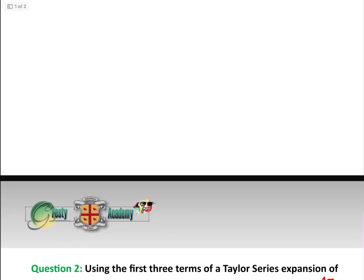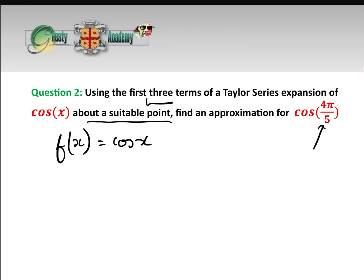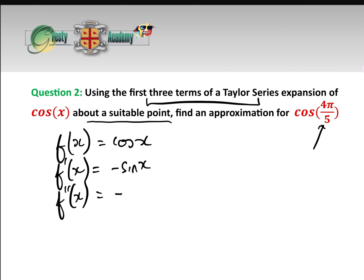This leads us to question 2, where it doesn't tell us where to do the expansion — just about a suitable point. You will lose a mark if you don't choose the right point. We need a point close to 4π over 5, the value we want to approximate. For f(x) equals cos x, f dashed of x is minus sin x, and f double-dashed of x is minus cos x. The nearest point to 4π over 5 where we know the values of sine and cos is 3π over 4.